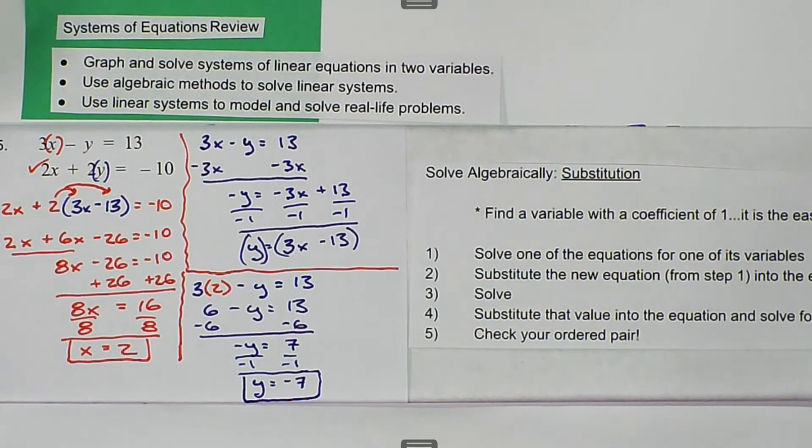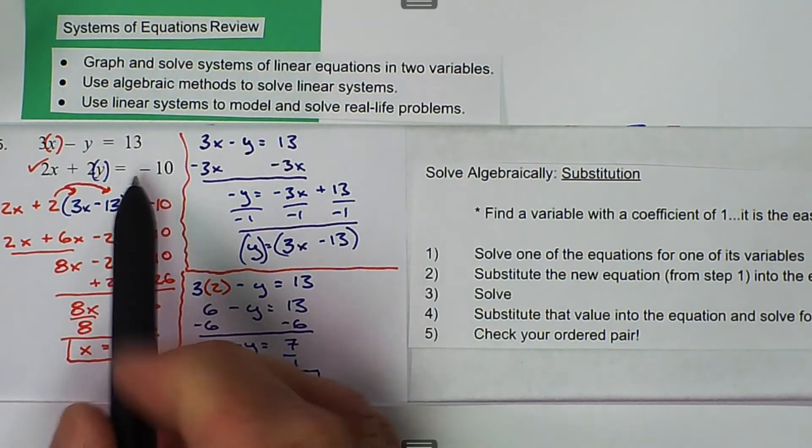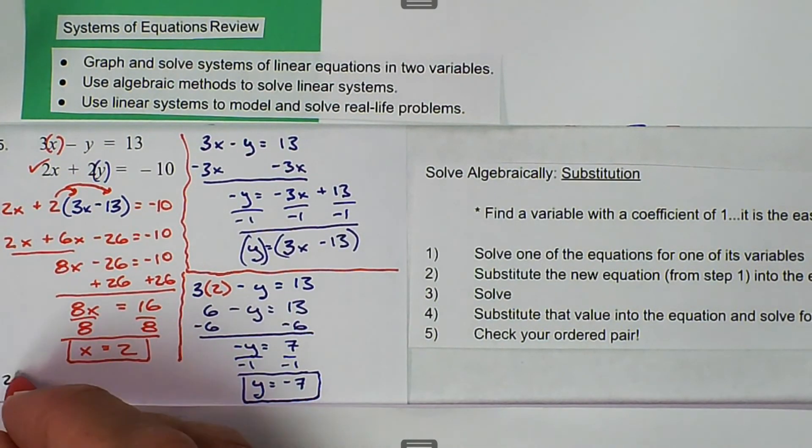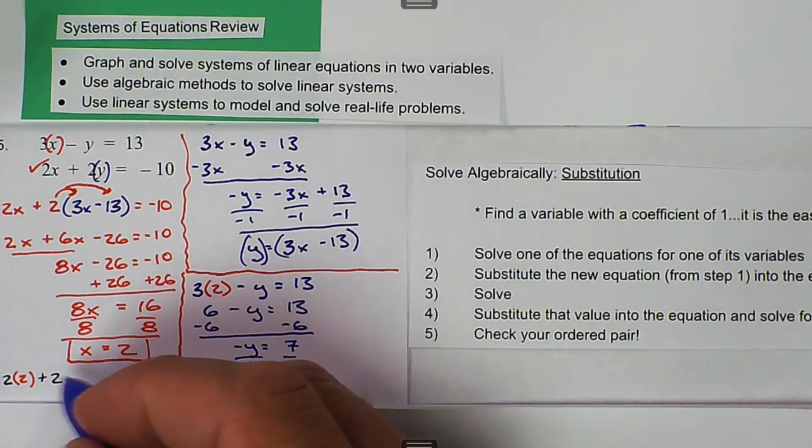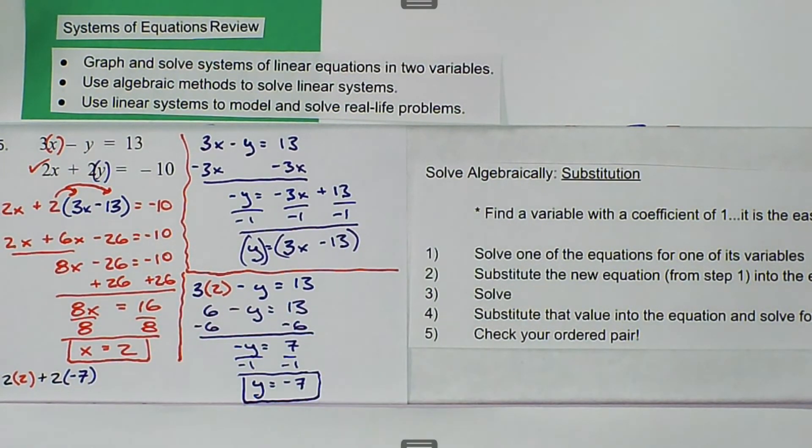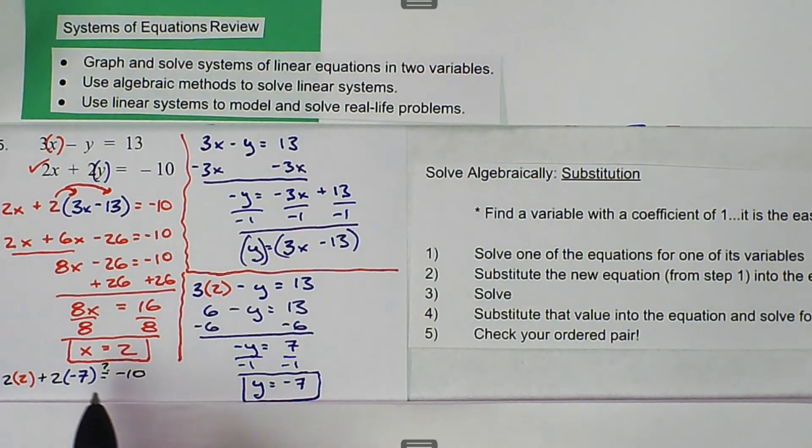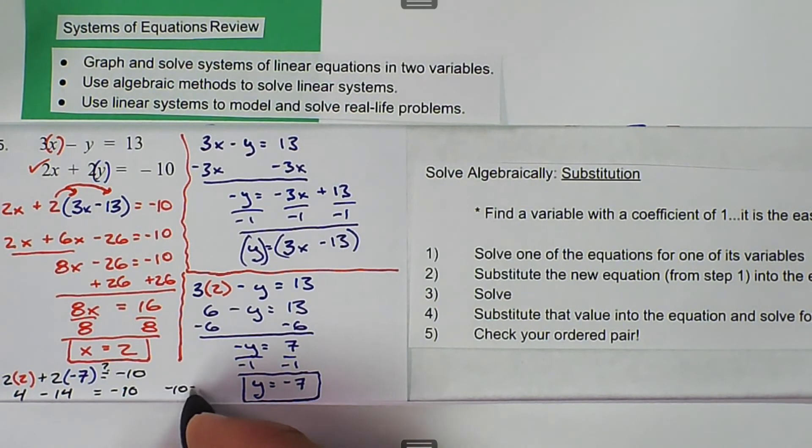We think we know what the two variables are, and then the last thing is we need to check to make sure that it's true. Let's do the values in, and we'll substitute them into the bottom equation here. We have 2 times 2 plus 2 times negative 7, and we're checking that. So I want to put a question mark there because we want to check to make sure that that is true. Then we get 4 minus 14, and that is equal to negative 10. So we get negative 10 equals negative 10.